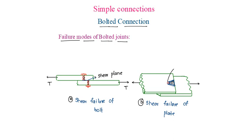The second is shear failure of plate. This is our bolt. If the bolt is of high strength and plate is of lower strength, then it shears the plate.